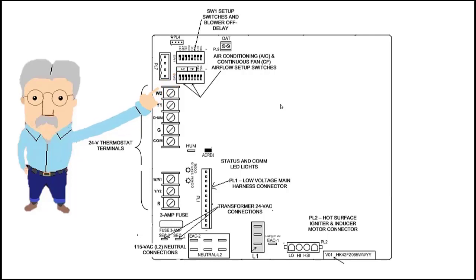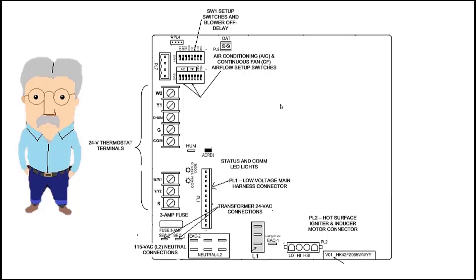Then we have our 24 volt thermostat terminals. We go from our R, our Y terminals, our W terminals, our G terminal, and our C or common terminal. We have our 24 volt 3 amp fuse. Here we have our 24 volt connections for our transformer. We have our status lights, our 12 pin connector, our high voltage or 120 volt neutral bus, the hot bus. And then we have a 4 pin connector that connects our draft inducer fan and our hot surface igniter.